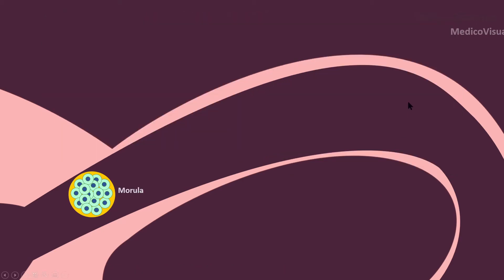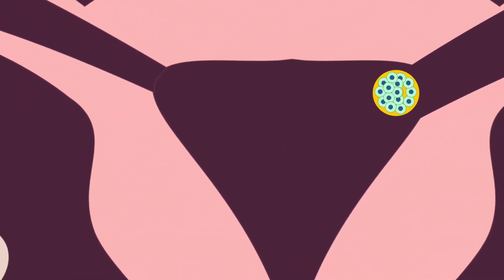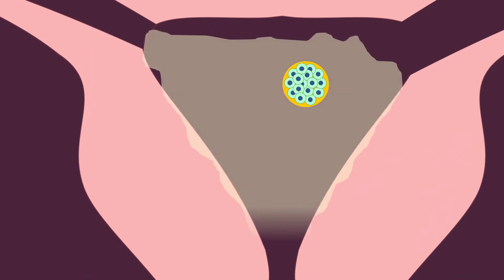The early embryo travels from the uterine tube towards the uterus with the help of the ciliary action of cilia that are present inside the uterine tube. And now this early embryo is welcomed inside the uterine cavity by this nutritious fluid that is called uterine milk.